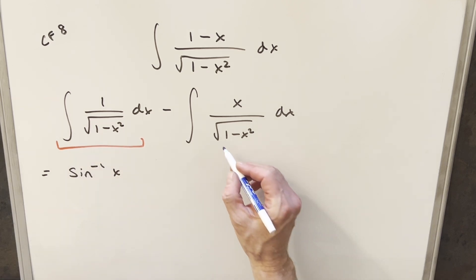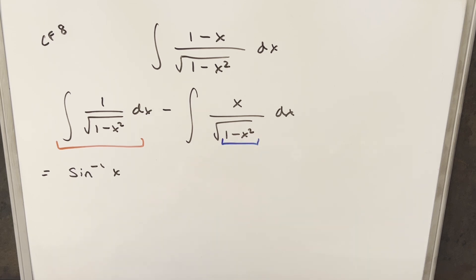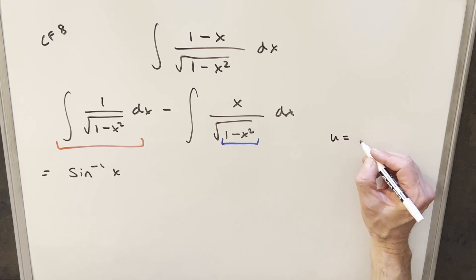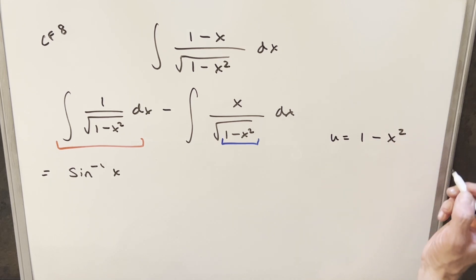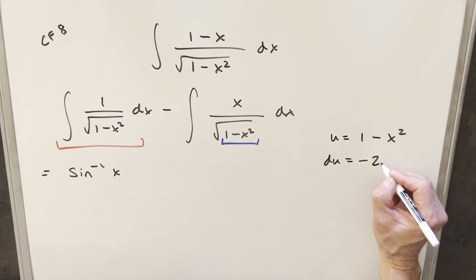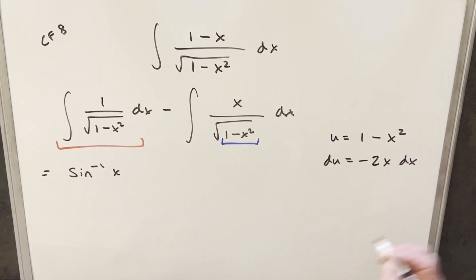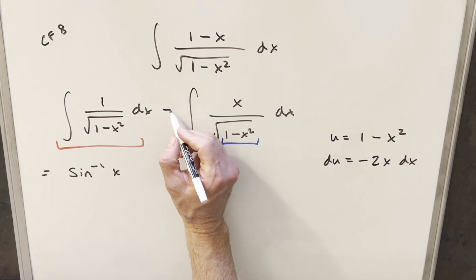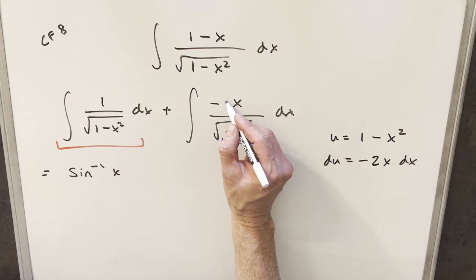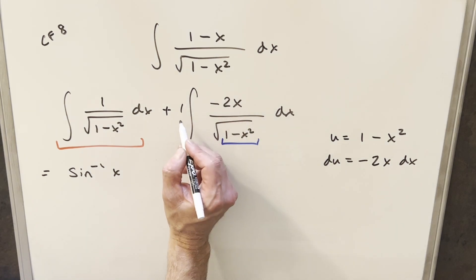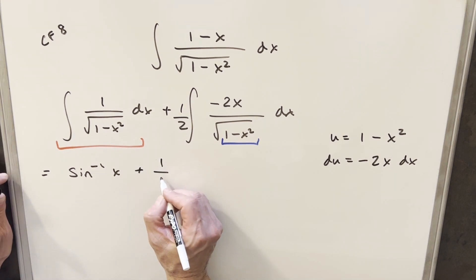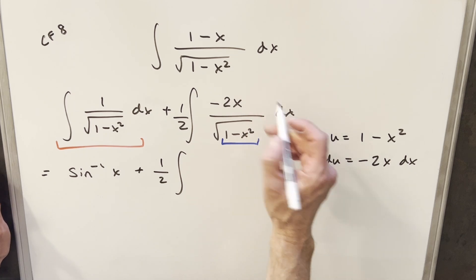Now for the second integral, it's not too bad either because what I can do is a u-substitution. I'm going to make u equal to what's inside the square root, so u equals one minus x squared. Taking the derivative gives minus 2x dx. I already have the x in the numerator, so I can take this minus and bring it inside, and I'll multiply by one half out front so I don't change it. So now we'll go ahead with this substitution.